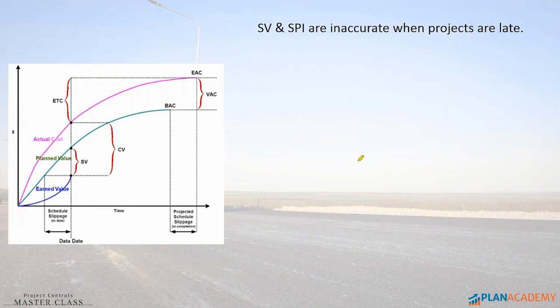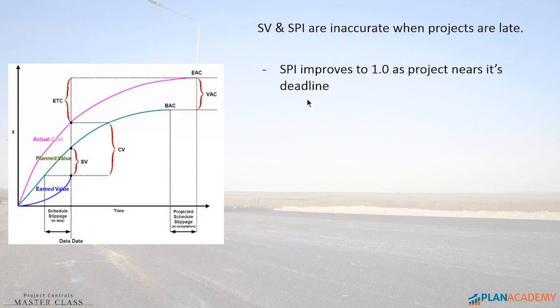SPI, if you remember, is a value where if you're performing exactly on schedule, the value is one. If you're behind schedule, then you're less than one — between zero and one. And if you're over-performing, your value can be more than one. But as we get closer to a deadline, if SPI has been low — meaning we've been performing less than one, meaning we're late — SPI always goes back to one. That's a limitation of schedule performance indicator.